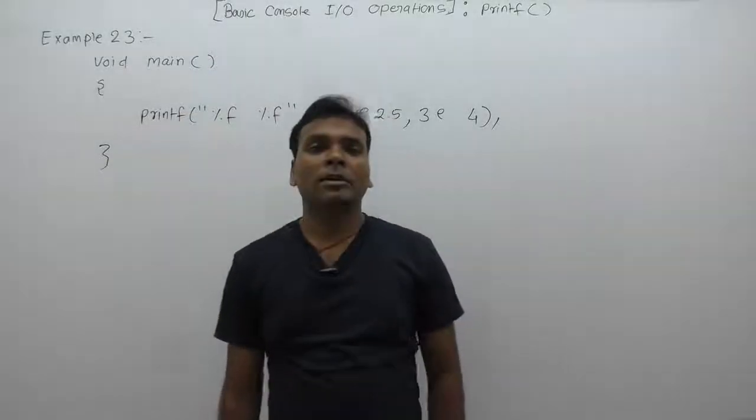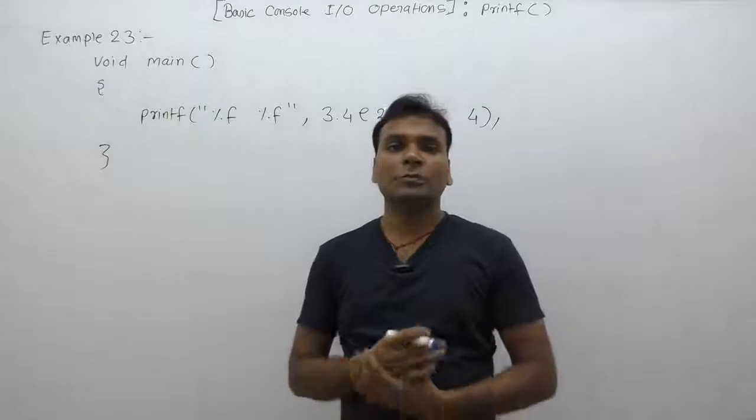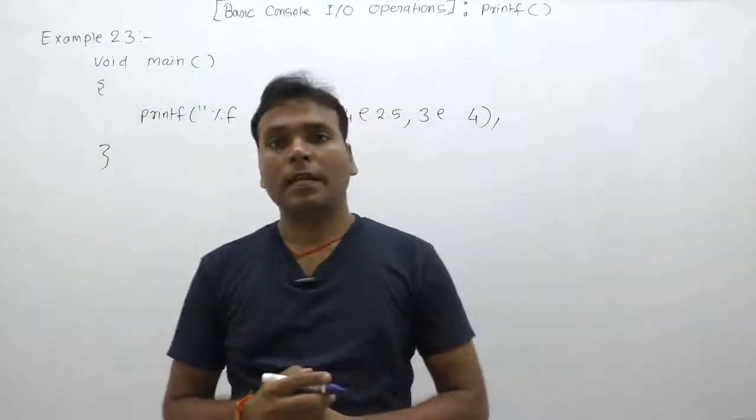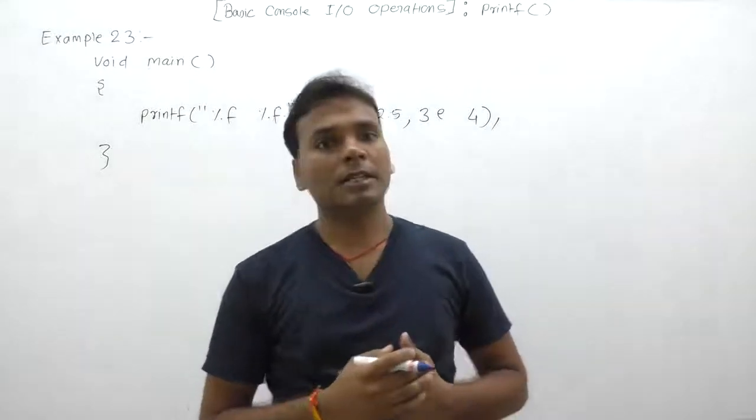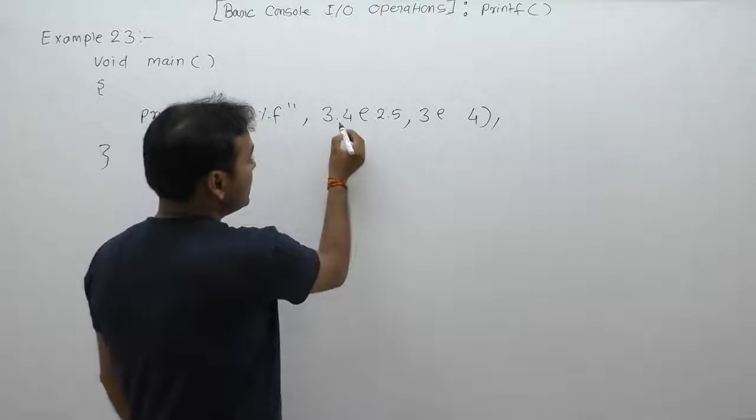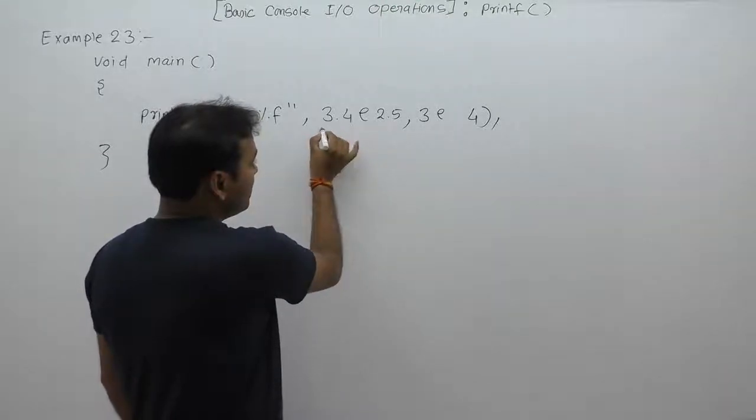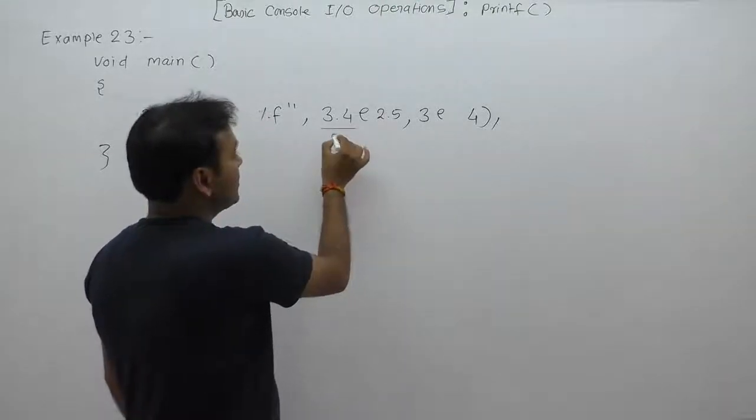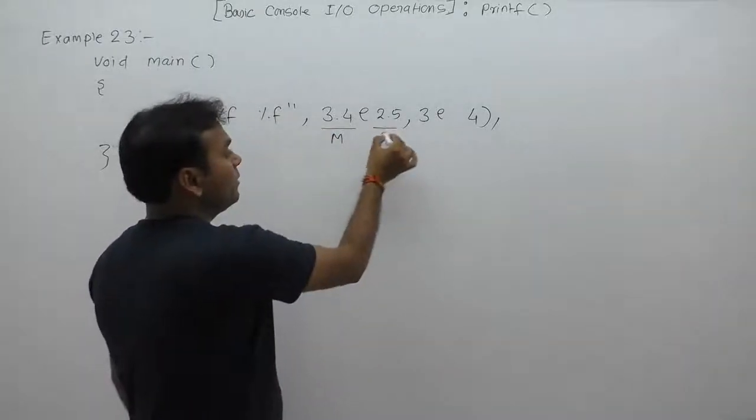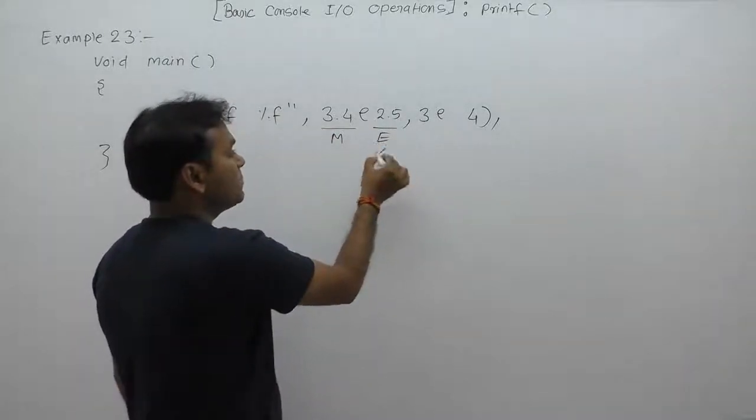Now let's see another example with respect to the exponent representation of floating point numbers. According to floating point representation, there are two rules we must satisfy. Decimal point is allowed only in the mantissa part; it is not allowed inside the exponent.